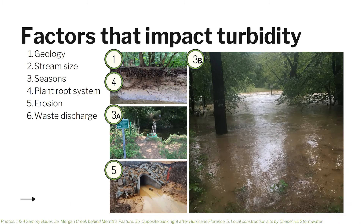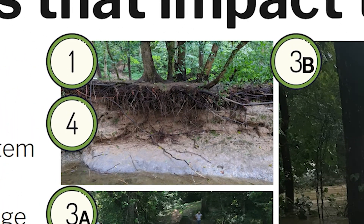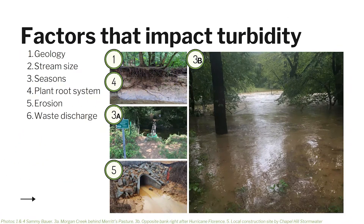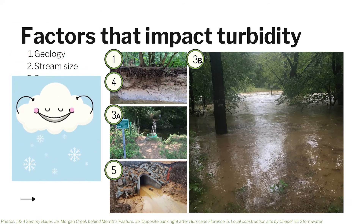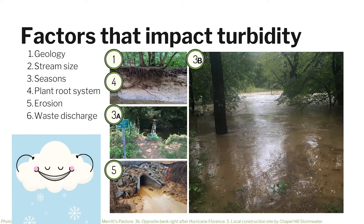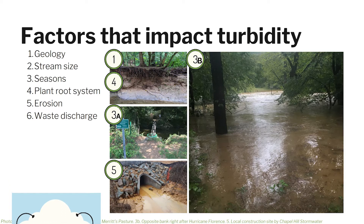So what impacts turbidity? First is geology — the types of material in the area where the stream flows, such as banks with loose soil, are more likely to see erosion. Also, stream size matters: large rivers may have microscopic plants that increase turbidity. And seasonal weather plays a role — spring snowmelt and rain can increase runoff, which generally also increases turbidity.